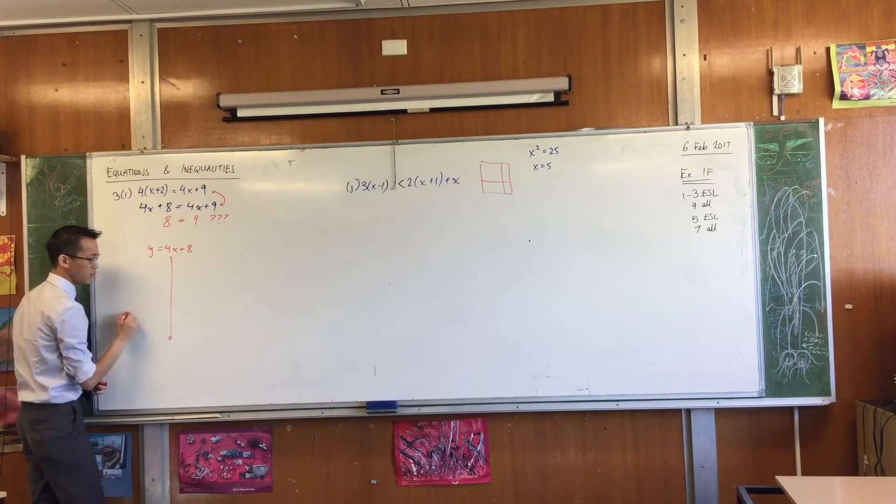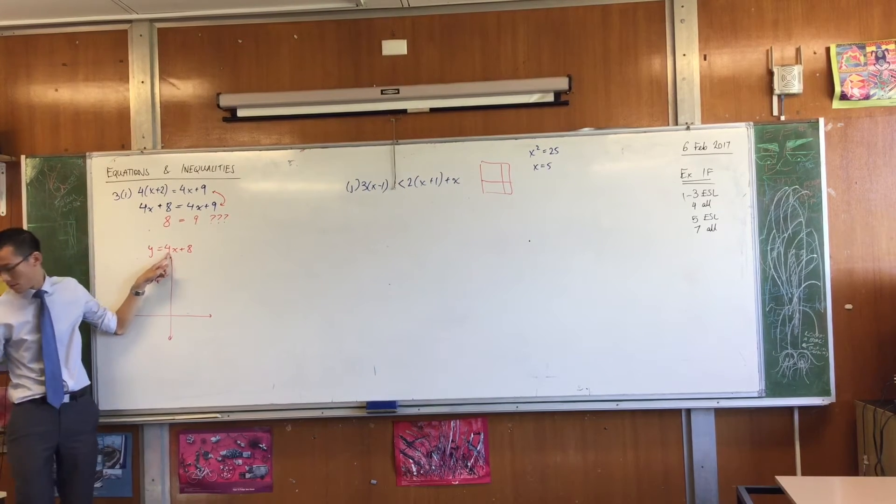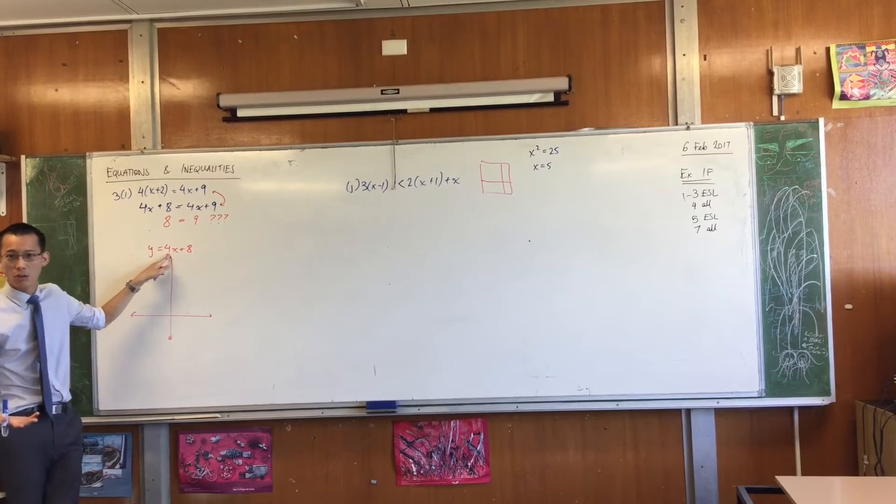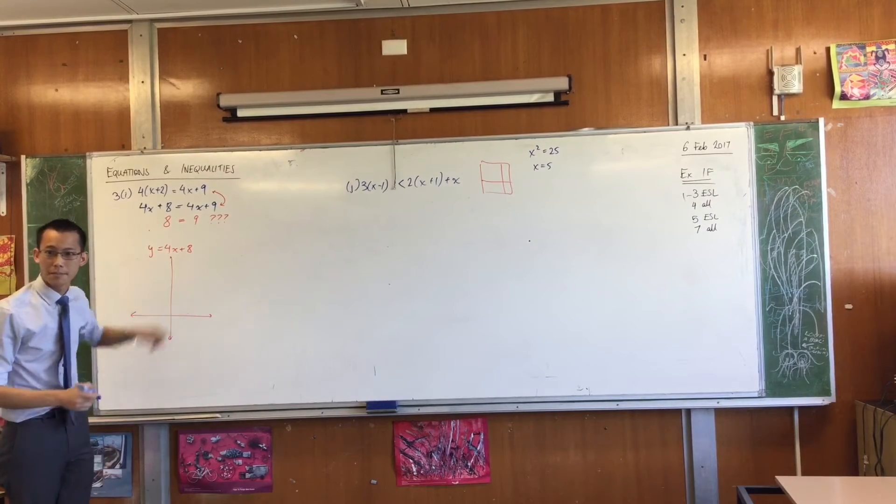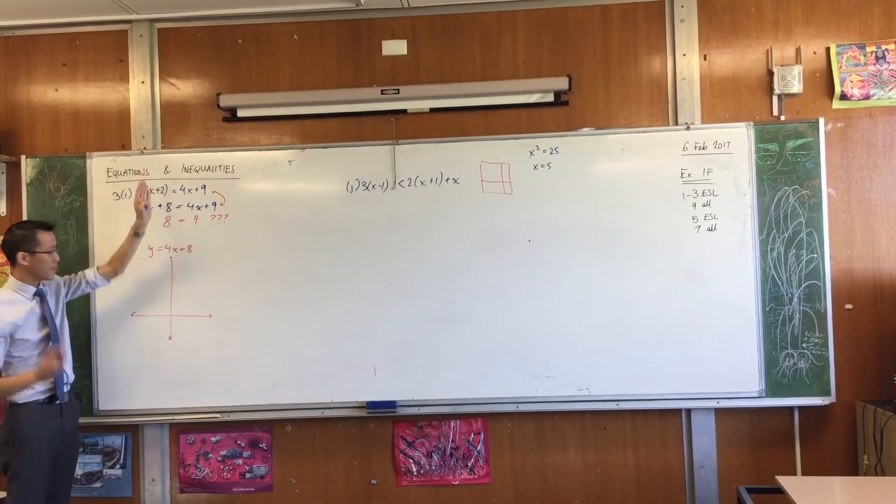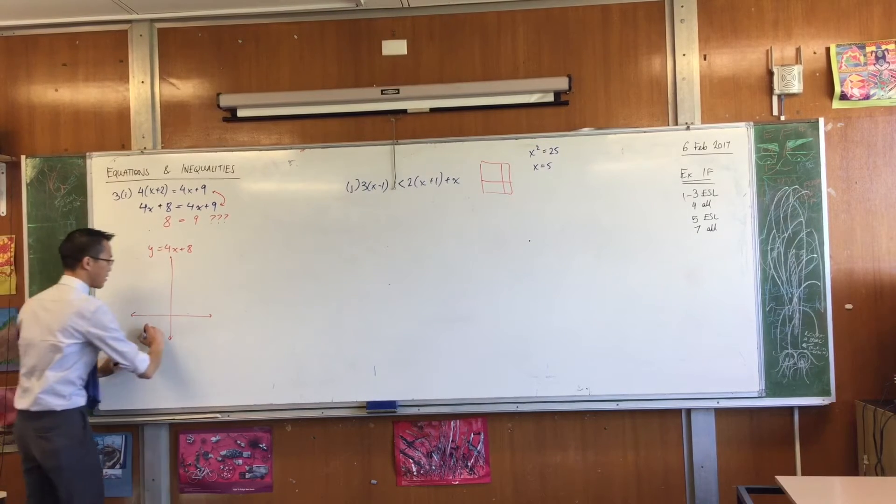Can you give me some words to use to describe it? What does that 4 tell you? The gradient. It tells you the gradient? So 4, is that steep or shallow or going up, going down? What is it? It's going up and it's skyrocketing, right? So very steep. What about this 8? What does that tell you? The y-intercept. It's the y-intercept. So something like this.